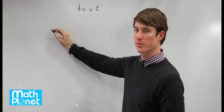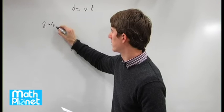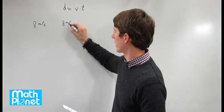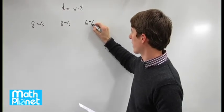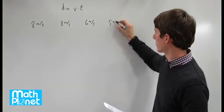And we have four different speeds: 8 meters per second, 8 meters per second, 6 meters per second, and then slightly slower at 5 meters per second.